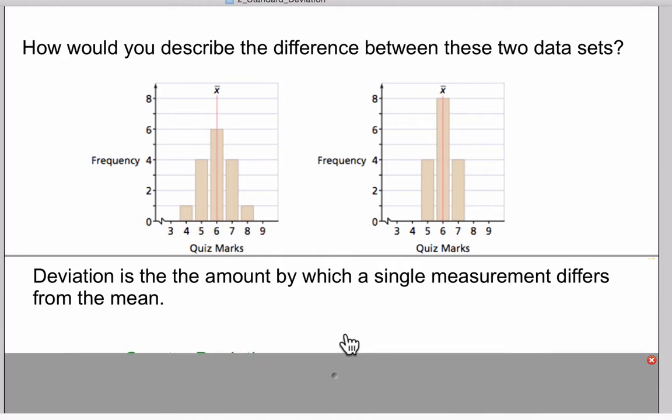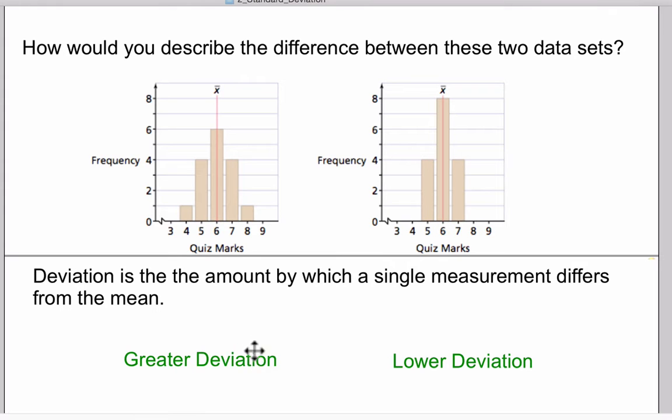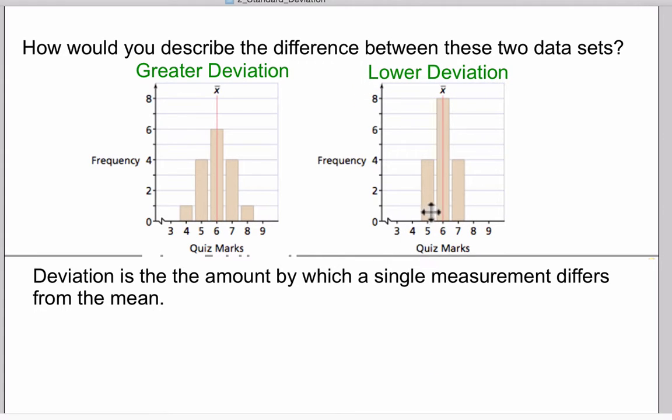We're going to come back to a definition that we gave previously, and that is deviation. Deviation is the amount by which a single measurement differs from the mean. If we're going to take a look at describing these, well, this one has greater deviation and this graph has lower deviation because the individual values here differ less from the mean. The deviation here for four would be four minus six, which is negative two, whereas over here the low deviation is five minus six, which is negative one.